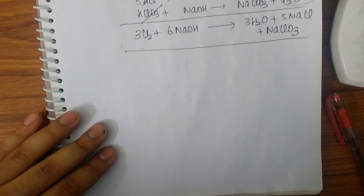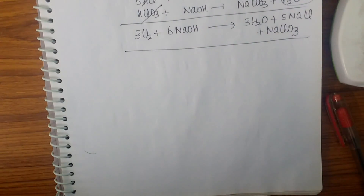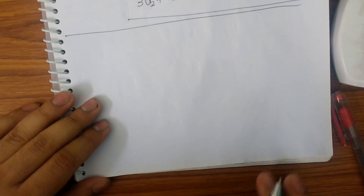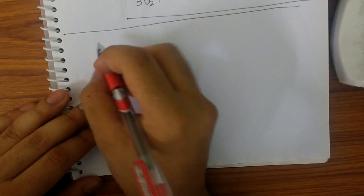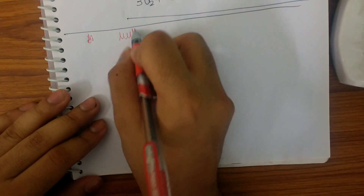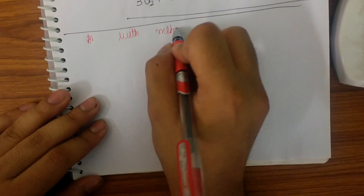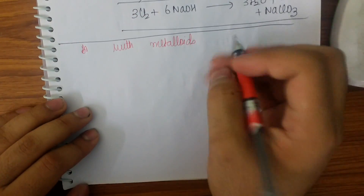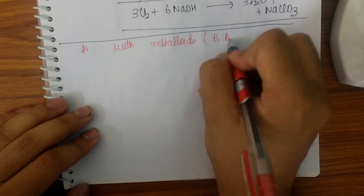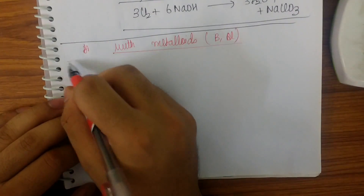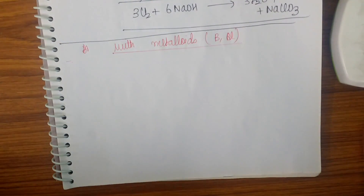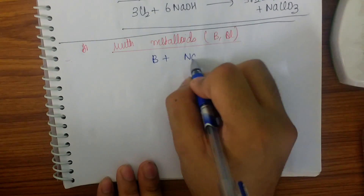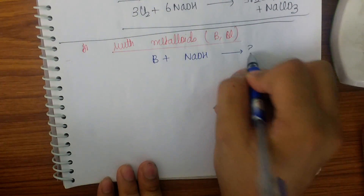Similarly we can derive for Br2, I2, and F2 also. We can see that all reactions can be derived with the help of mathematics. Now let me go to the next one, which is with metalloids. I will be taking two examples: beryllium and aluminium. First of all I will begin with boron. Boron along with NaOH gives question mark.